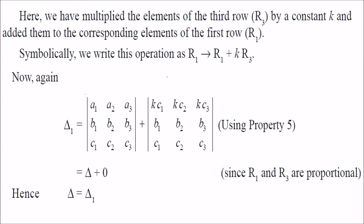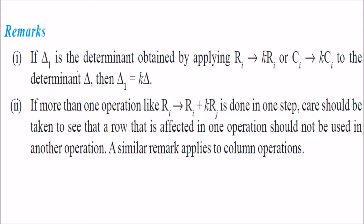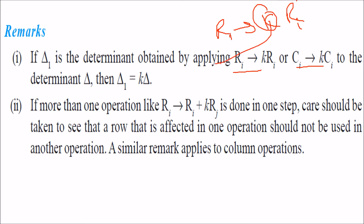To verify this, the new determinant equals the sum of two determinants; when you take k out from one, two rows become equal and that part is 0, leaving the original determinant unchanged. Note: if you are just multiplying row R_i by k (i.e., R_i → k·R_i), the determinant gets multiplied by k. Also, if more than one operation is done in one step, take care as it may introduce a different sign.